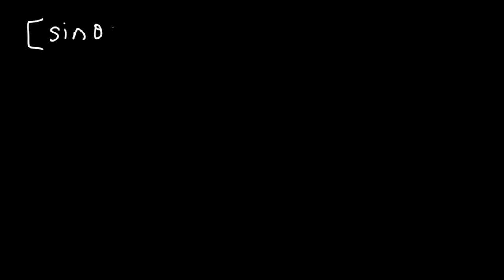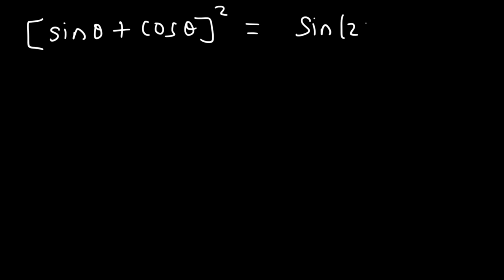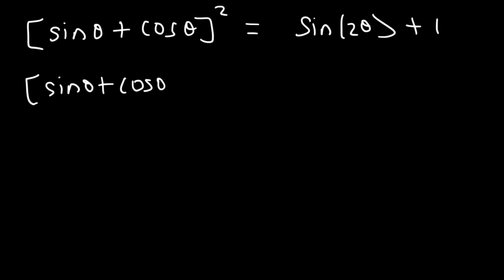Now let's work on some verifying the identity problems with double angle formulas. Show that (sinθ + cosθ)² is equal to sin2θ + 1. The first thing we need to do is write this expression twice: (sinθ + cosθ)² is (sinθ + cosθ) times (sinθ + cosθ).